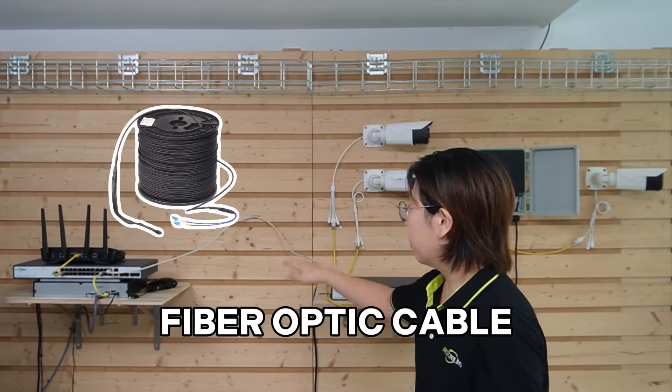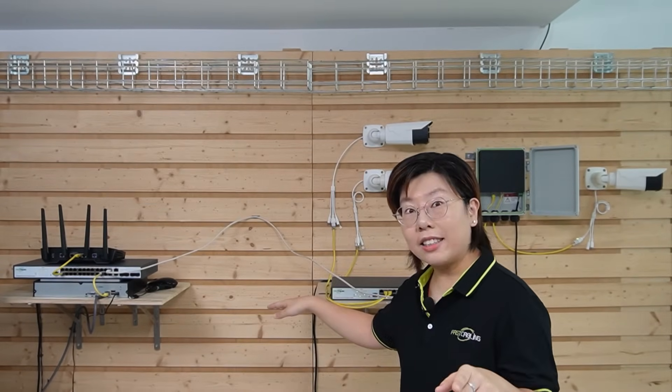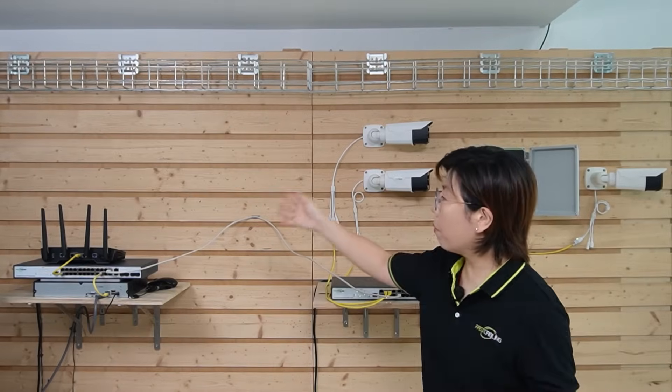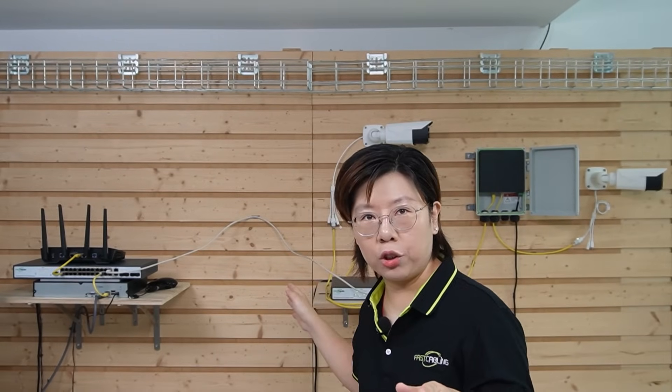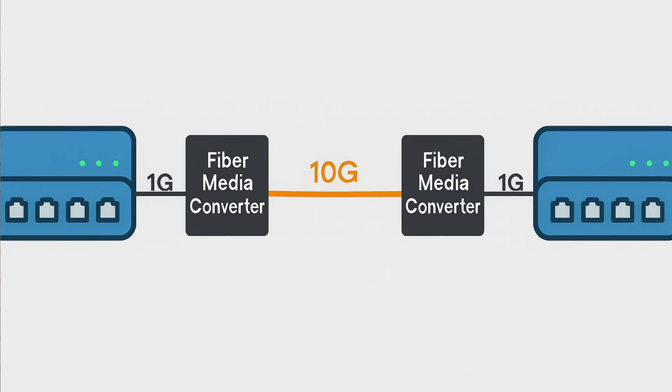Our client's first thought was: we'll add fiber optic cables between the switches and 10G media converters on both sides. Boom — 10G link! Well, not quite. If only the link between the switches is 10G but the switch port feeding it is still 1G, that means you're still getting 1G. You've widened one lane of a road, but the on-ramps and off-ramps are still a single lane — so there's no use.